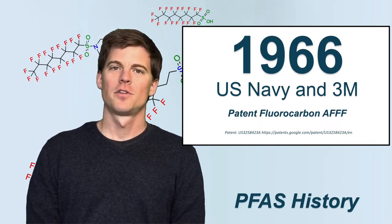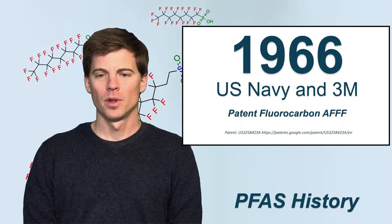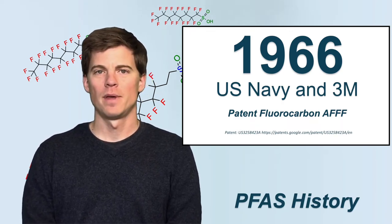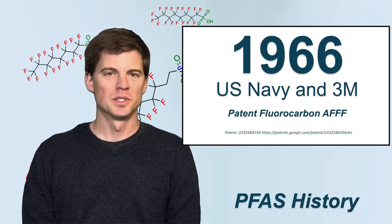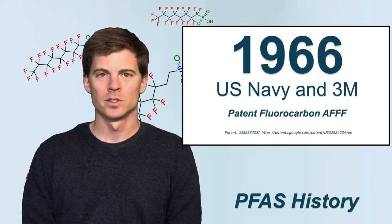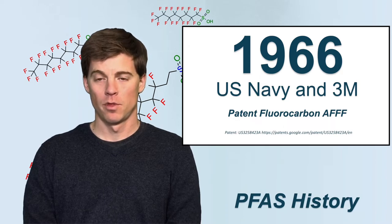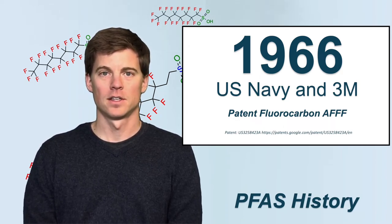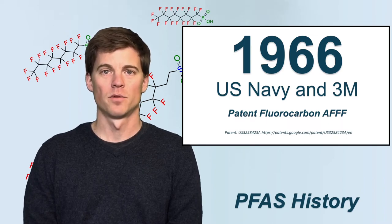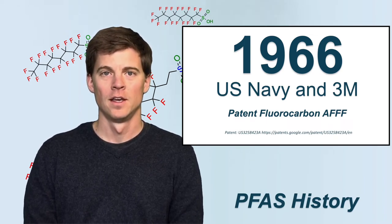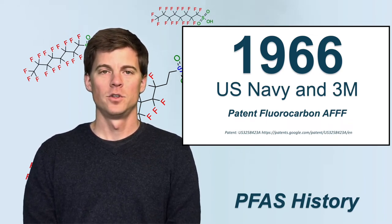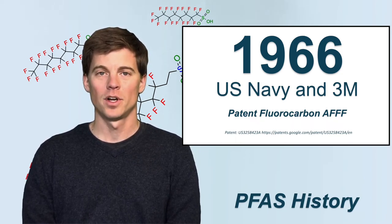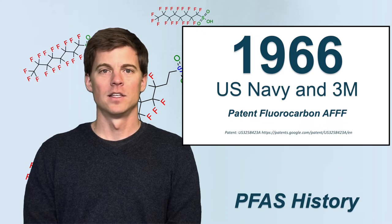For the next 30 years, AFFF was used for fire suppression. Teflon was manufactured — billions and billions of dollars' worth sold. During all of this, 3M especially made many products with PFOS — perfluorooctane sulfonate — like Scotchgard. DuPont used a lot of PFOA, which they referred to as C8, in the production of Teflon.